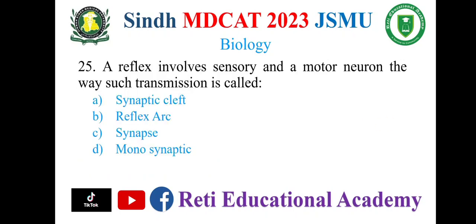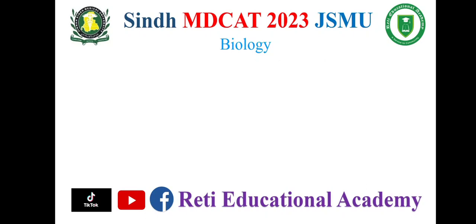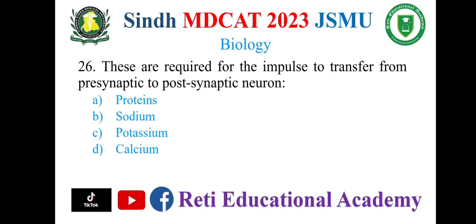A reflex involves a sensory and a motor neuron. The way such transmission is called: A. Synaptic cleft, B. Reflex arc, C. Synaptic, D. Monosynaptic. The correct option is B. Reflex arc. Question number 26.